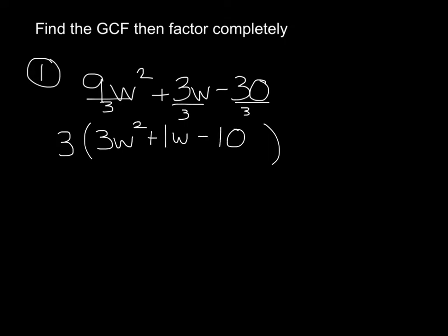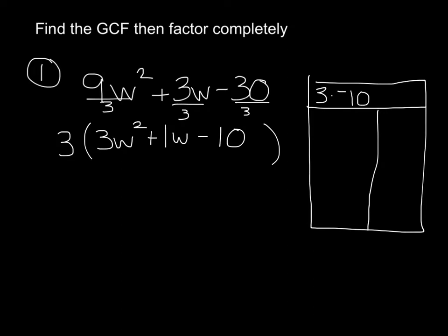And now I'm going to factor the trinomial that's in the parentheses the same way as we've been doing. So I'm going to make my chart, and I'm going to multiply in the top box. I'm going to multiply 3 times negative 10, because I'm just looking at the stuff that's in the parentheses. I don't want to worry about this 3 right here. That's just going to get carried down in my answer. So my answer will look something like this with the 3 on the outside. 3 times negative 10 is negative 30.